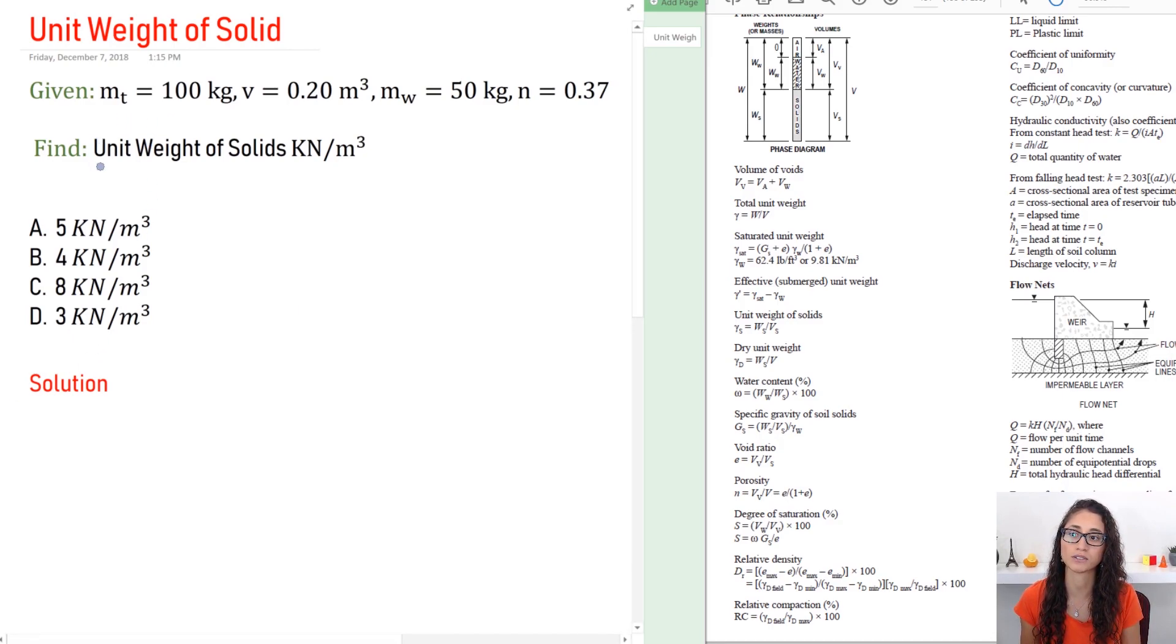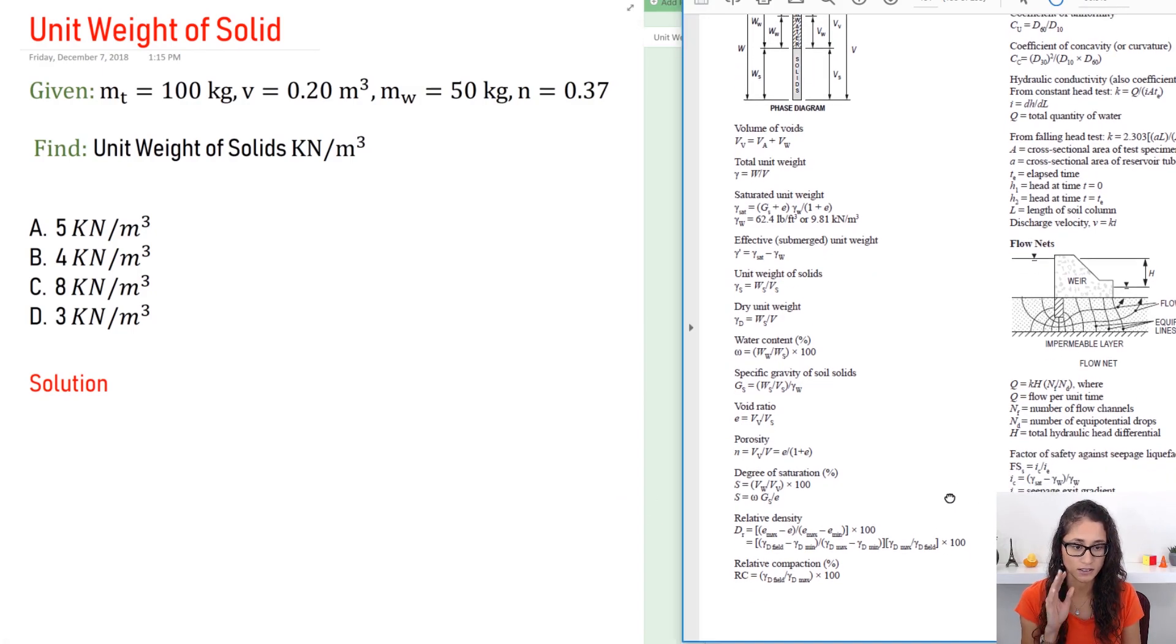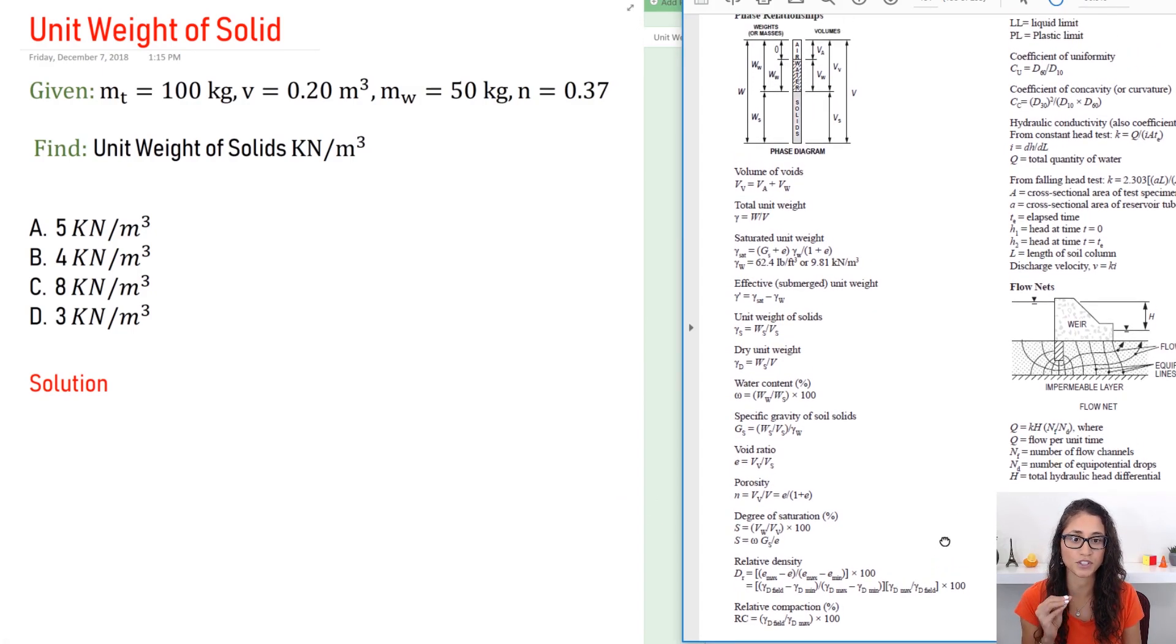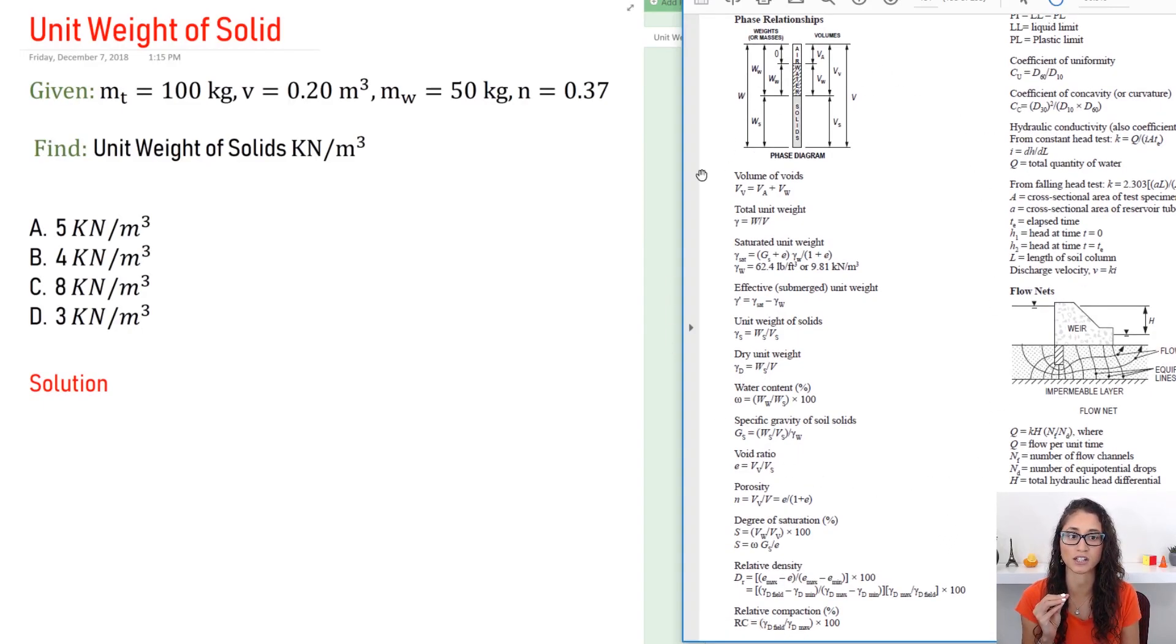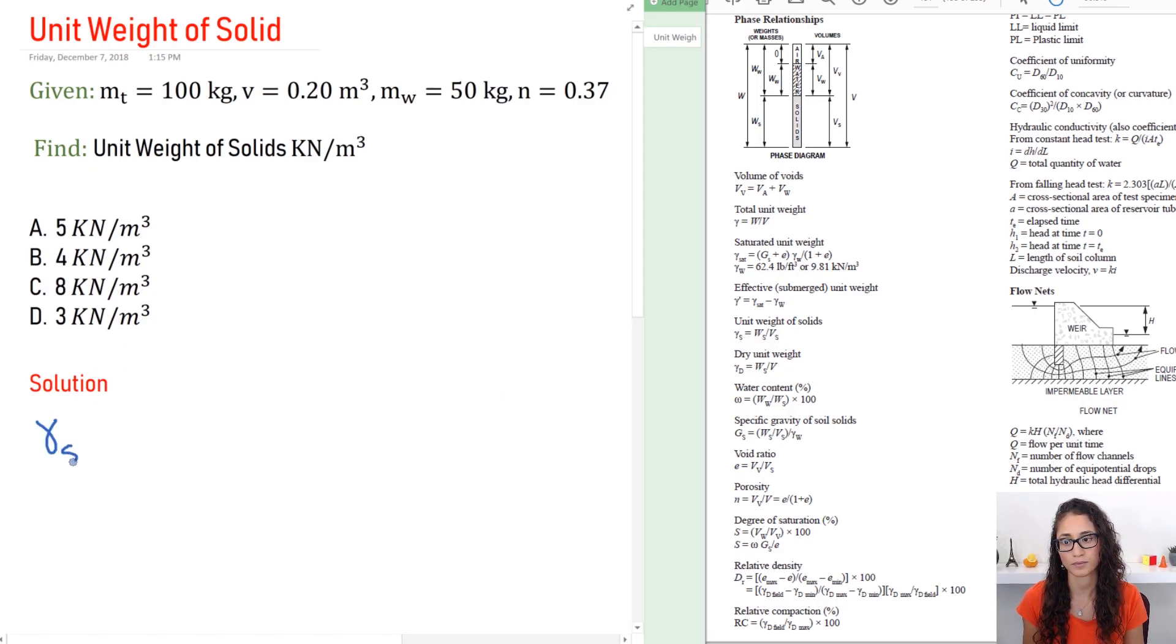We need to find the unit weight of the solid, so the first thing we're going to do as we did in the previous videos is write down the equation. So the equations are on page 152, that's where the geotechnical engineering starts on the NCEES handbook. So we have gamma_s is equal to the weight of the solid divided by the volume of the solid.